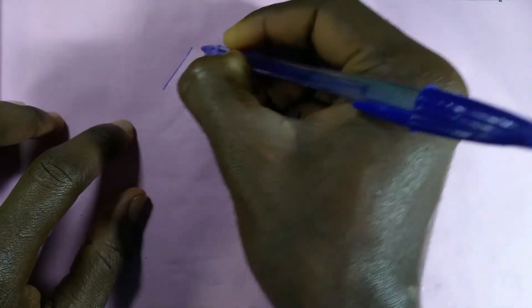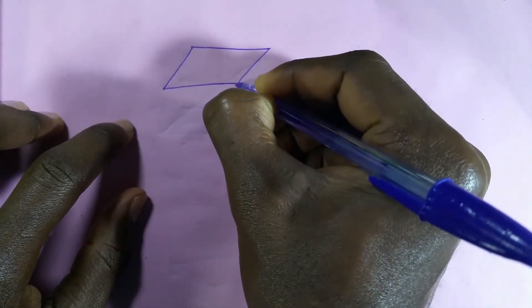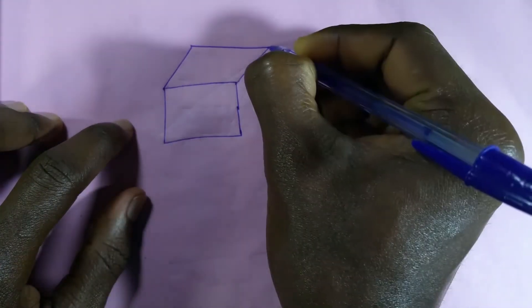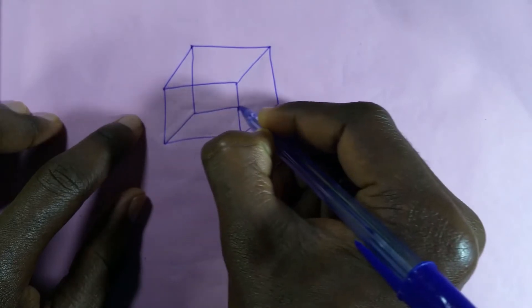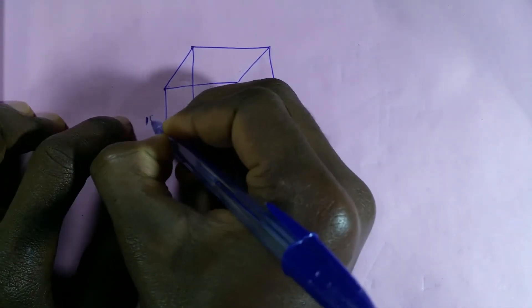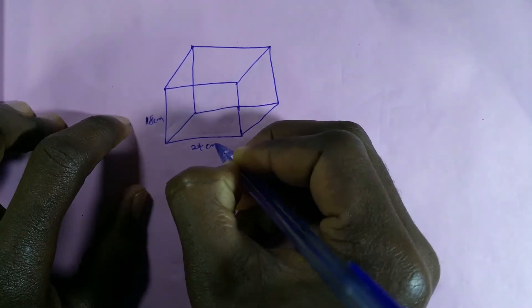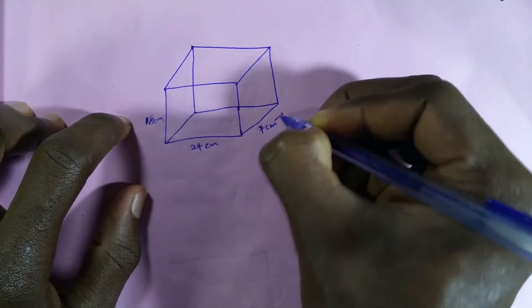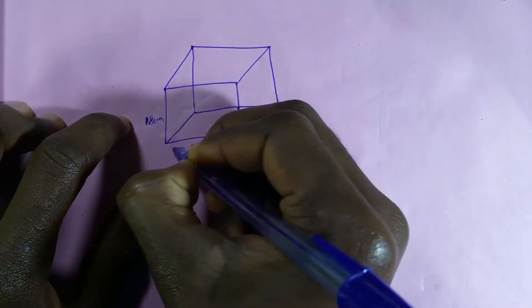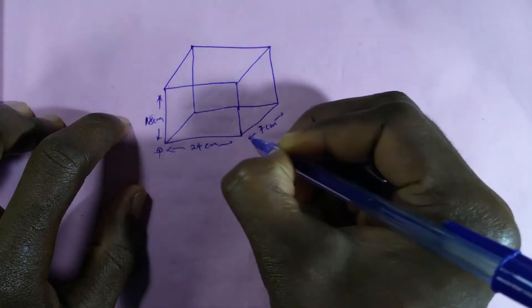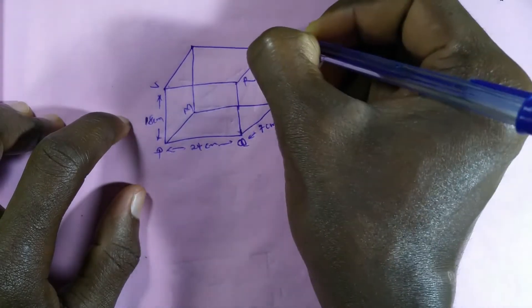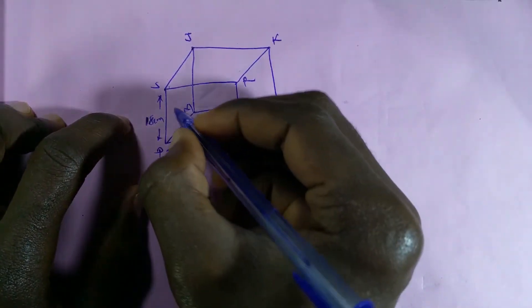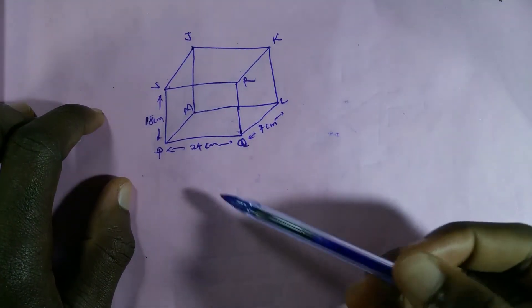Let me redraw the cuboid. A cuboid looks like this — it has a height of 18 cm, a length of 24 cm, and a width of 7 cm. We label the vertices: P, Q, L, M, S, R, K, and J.